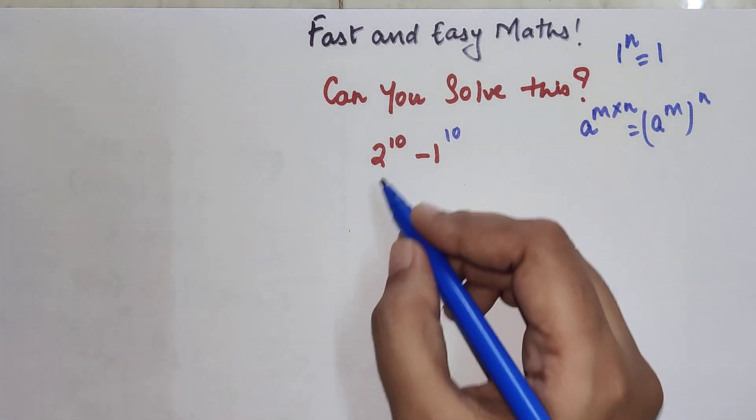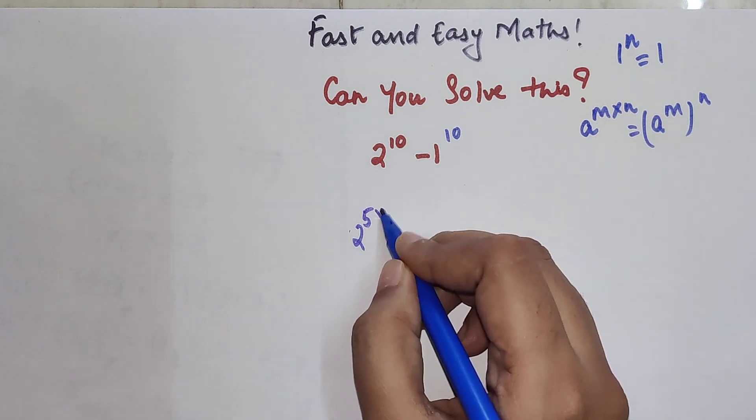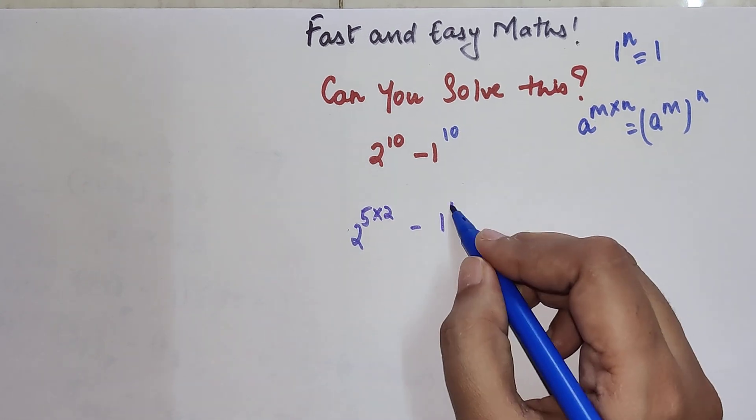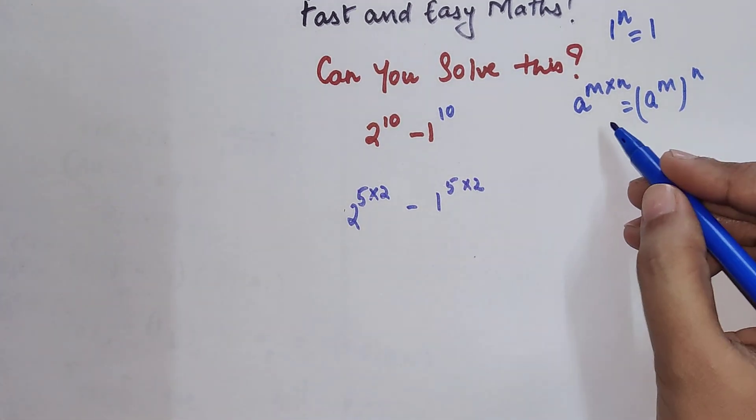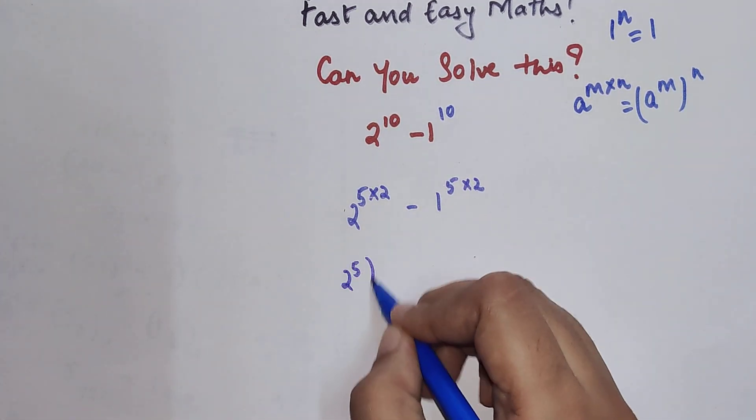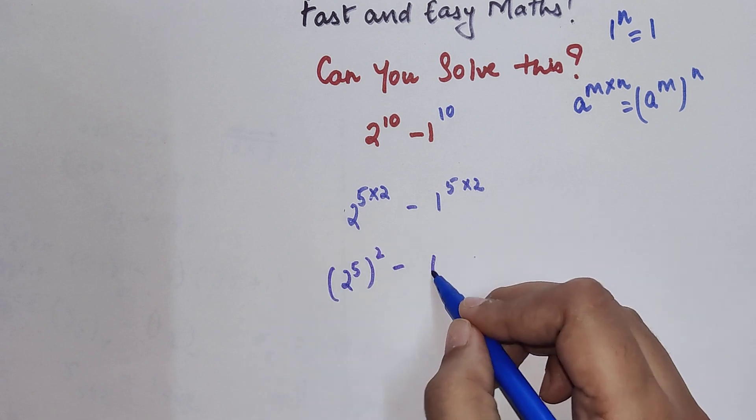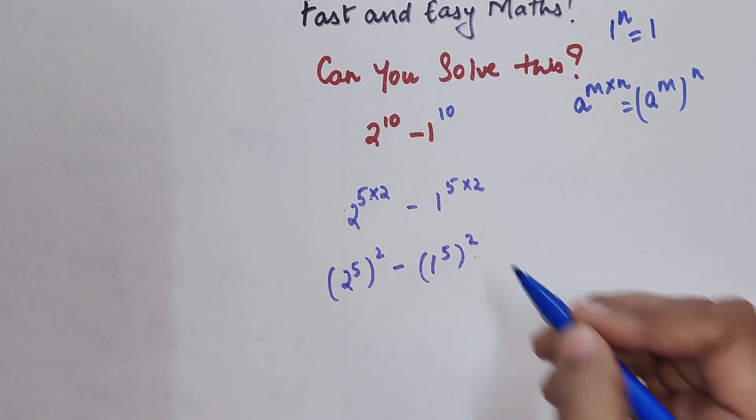So here I can write this as nothing but 2 raised to 5 times 2 minus 1 raised to 5 times 2. Using this particular law we can write this as 2 raised to 5 the whole square minus 1 raised to 5 the whole square.